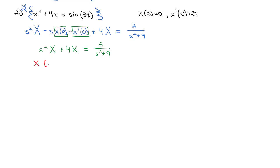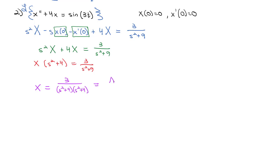Plugging in the zero initial conditions leaves s squared times X plus 4 times X equals 3 over s squared plus 9. Factoring out X gives X times s squared plus 4 equals 3 over s squared plus 9. Dividing, we find capital X equals 3 over the product of s squared plus 9 times s squared plus 4.